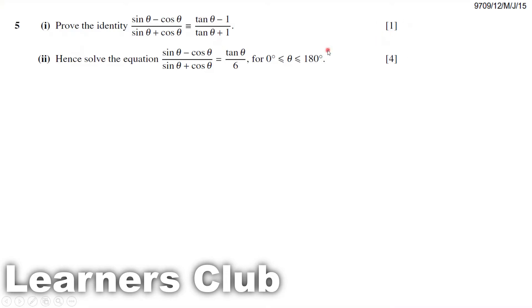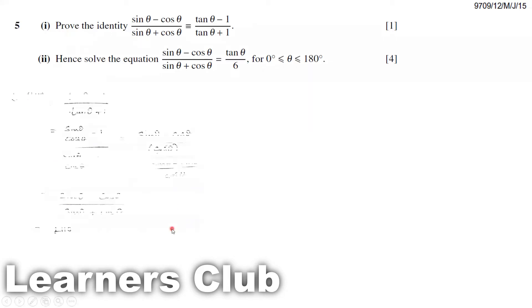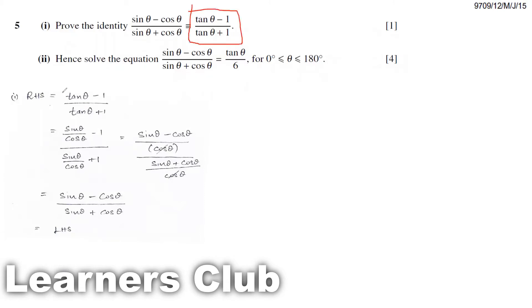This is only for one mark. You can choose any side — you can either start proving from the left hand side or the right hand side and then prove to the other. I found that taking the right hand side is easier, so I took the right hand side. We know that tan θ is equal to sin θ over cos θ.